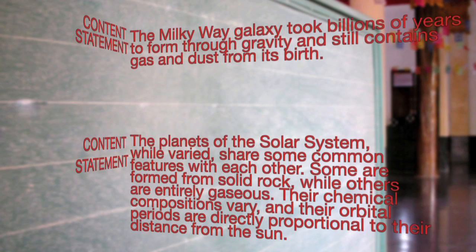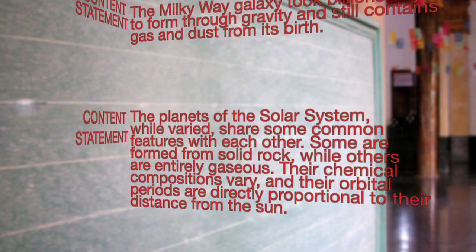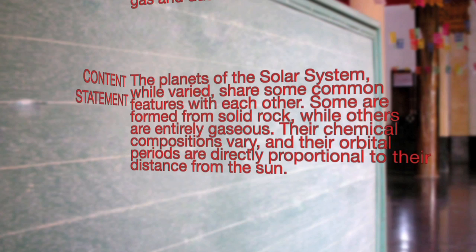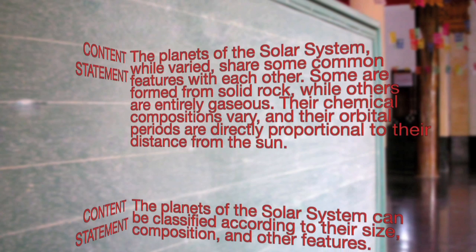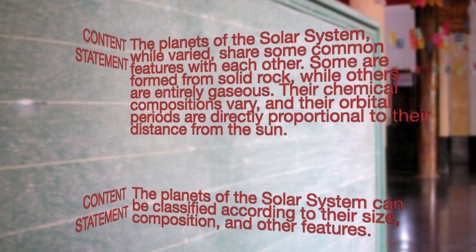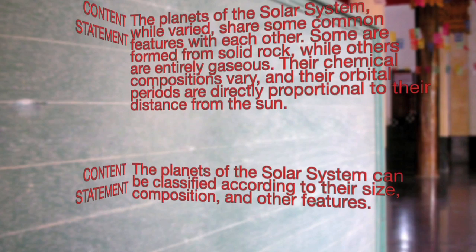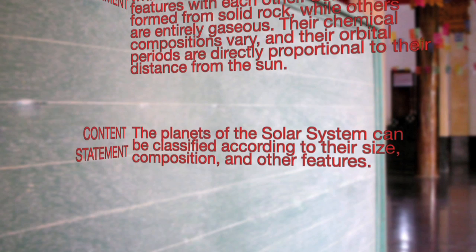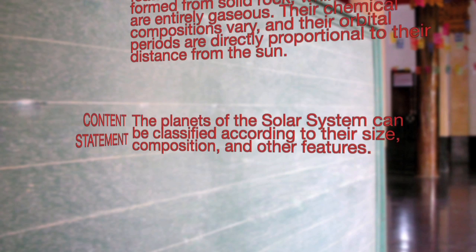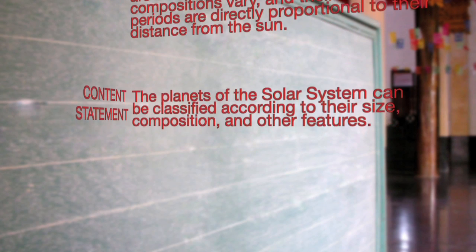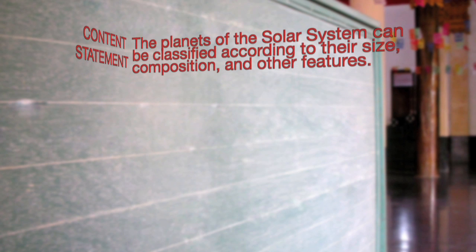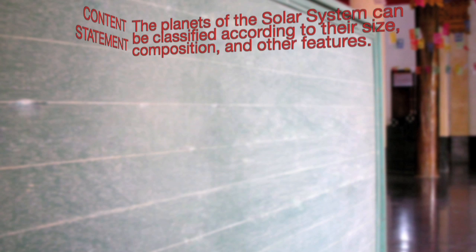The planets of the solar system, while varied, share some common features with each other. Some are formed from solid rock while others are entirely gaseous. Their chemical compositions vary and their orbital periods are directly proportional to their distance from the sun. The planets of the solar system can be classified according to their size, composition, and other features.